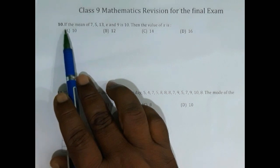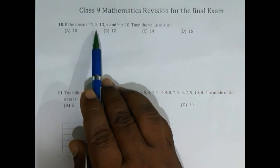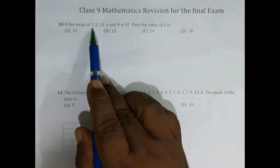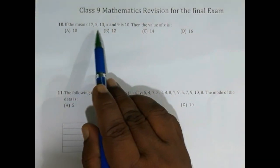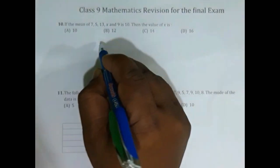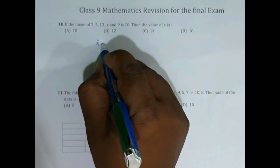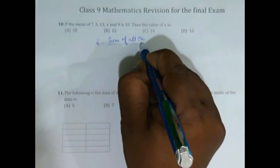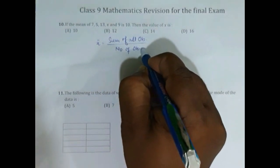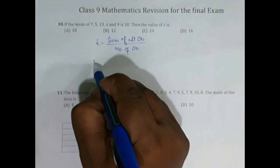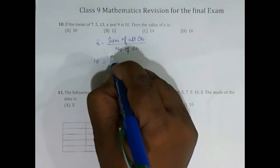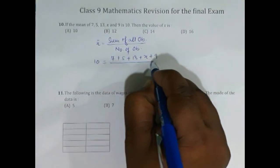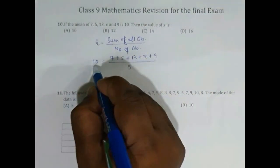Question 10: If the mean of 7, 5, 13, x, and 9 is 10, then find the value of x. So here you have 5 observations given and the mean of these 5 observations is 10. You know that mean x-bar equals the sum of all observations divided by number of observations.